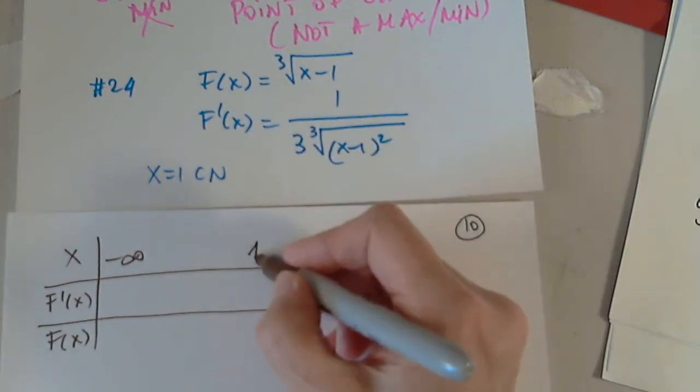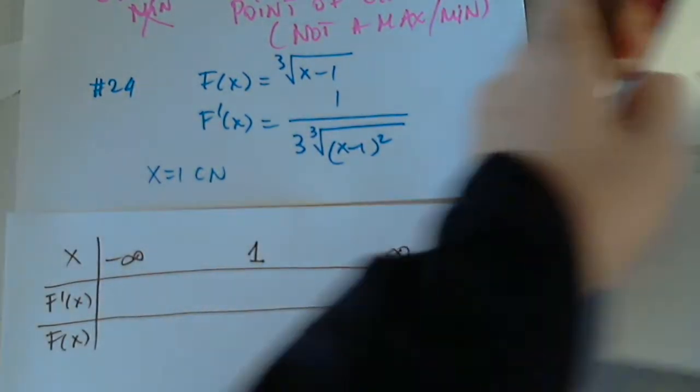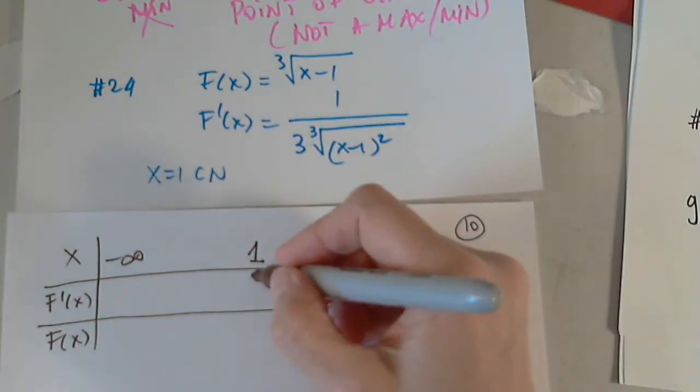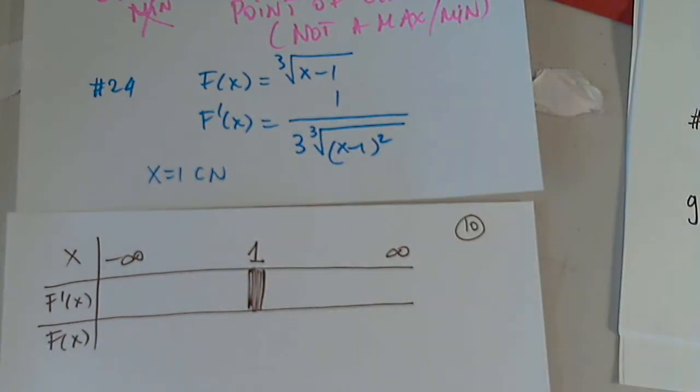We found critical number 1, and it came from f prime being undefined. I cannot write 0, this is the way I signify undefined. There is no number, I can't write anything, it doesn't exist.